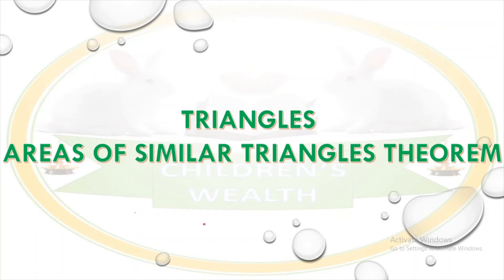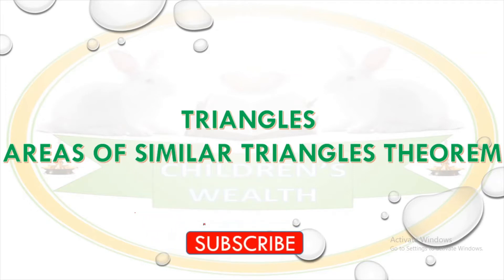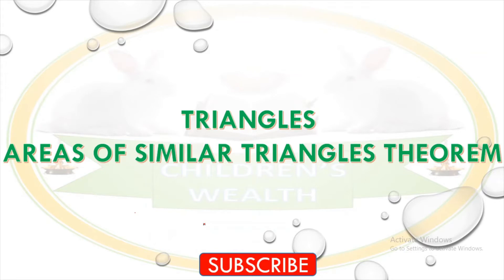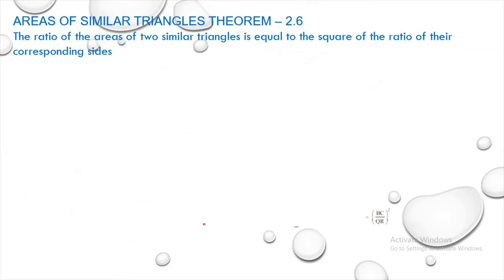Hi friends, welcome to your Children's Wealth YouTube channel. Today we will see about the Areas of Similar Triangles theorem, which comes under the Triangles chapter of SSLC. Theorem 2.6 states that the ratio of the areas of two similar triangles is equal to the square of the ratio of the corresponding sides.